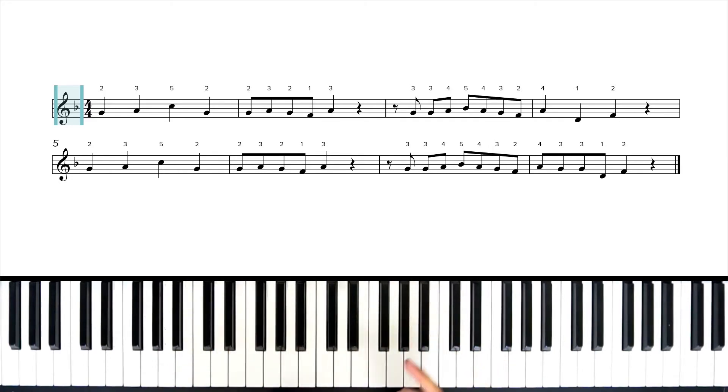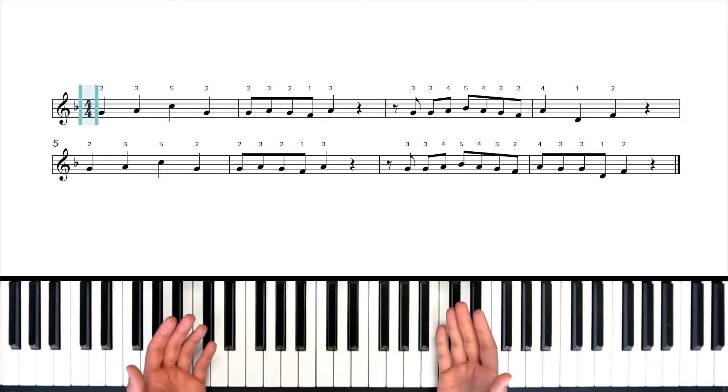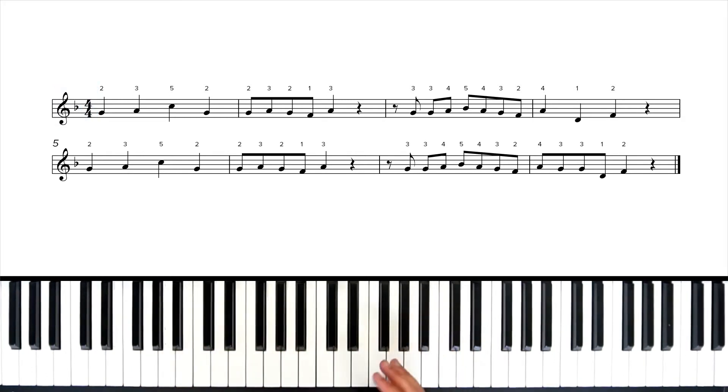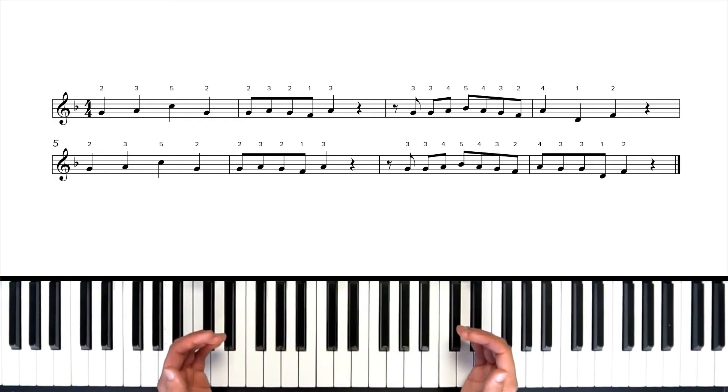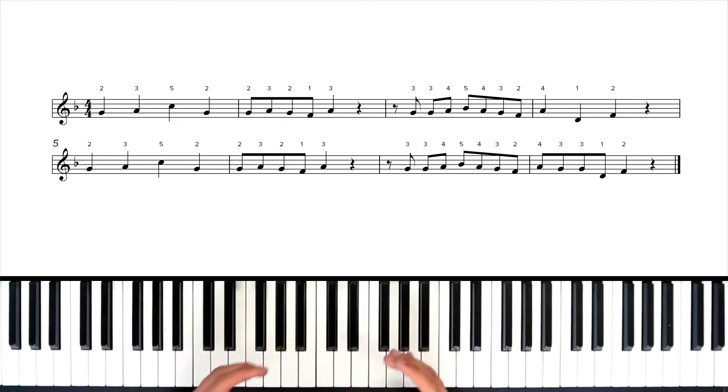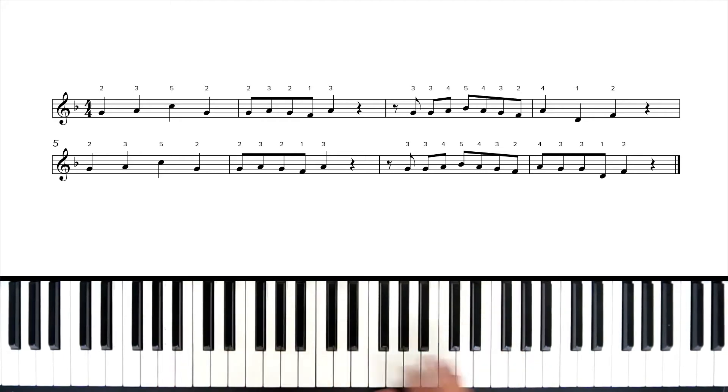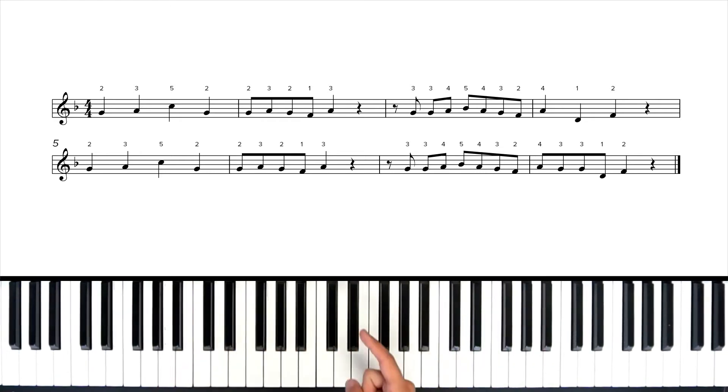But here our key signature is one flat. Our time signature is 4-4 which means four beats per measure. Now we're only looking at the first eight measures here of this chorus. The chorus in the song is 16 measures but they're almost identical so once you have this down it kind of repeats for the second half. So we're looking at eight measures and let's talk about the hand position for these eight measures.